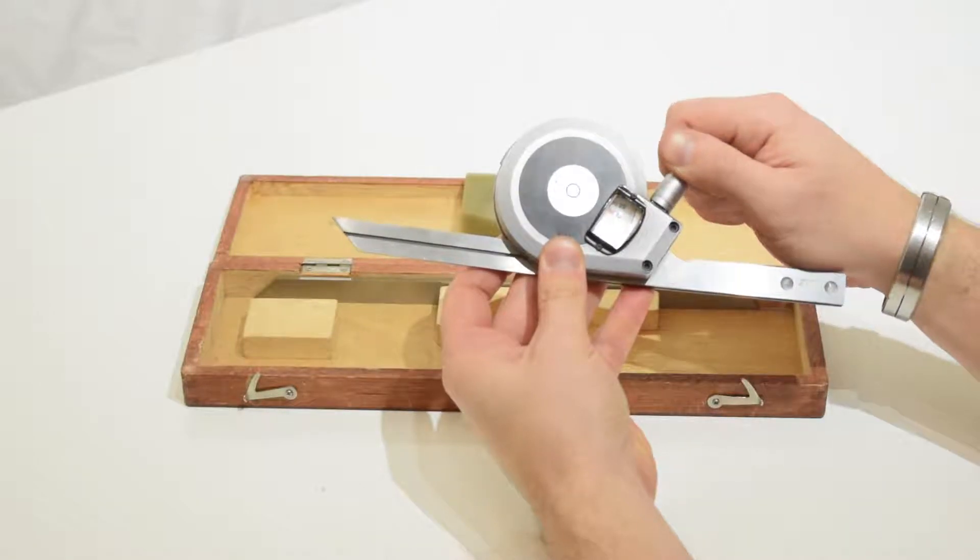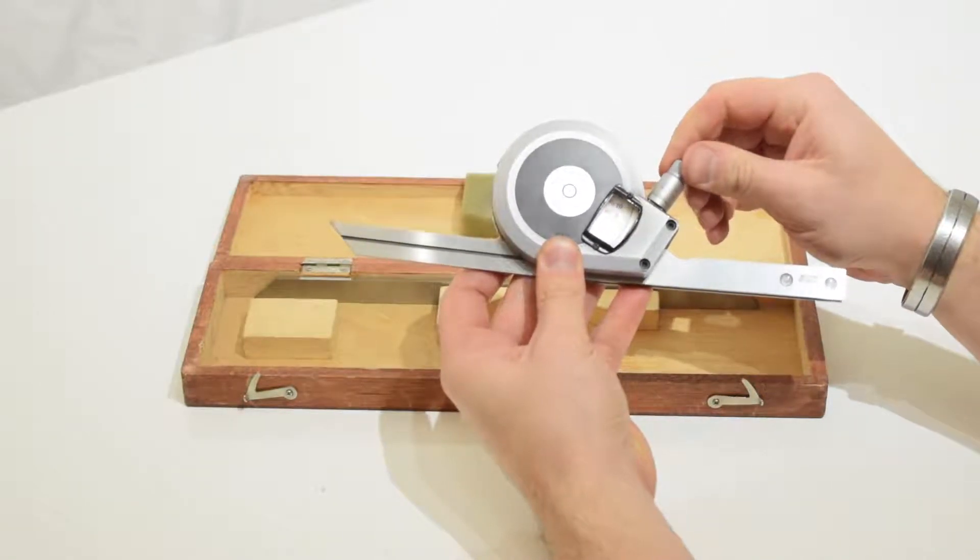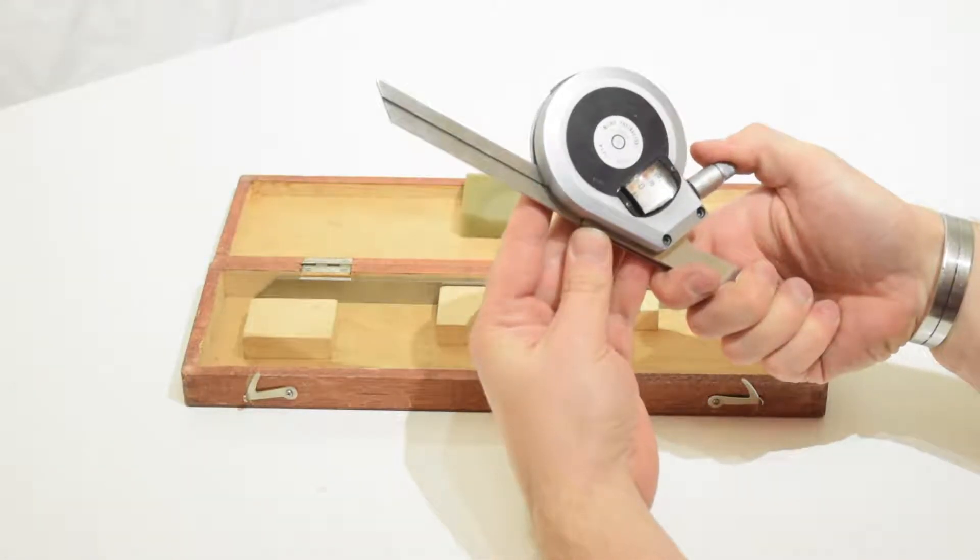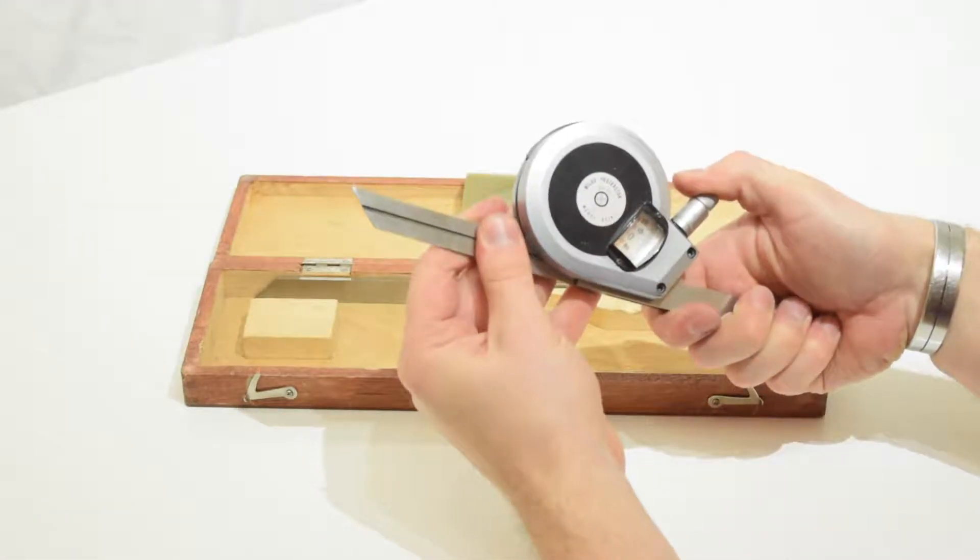The dial is actually marked four times 90 degrees, so instead of 1 to 360, that's four times 90.